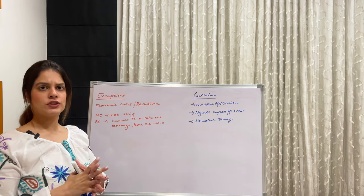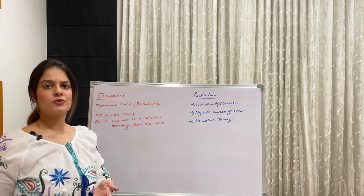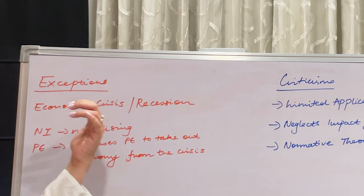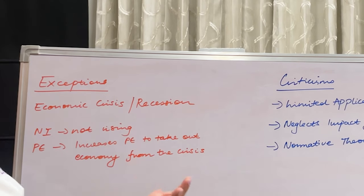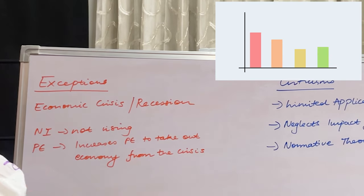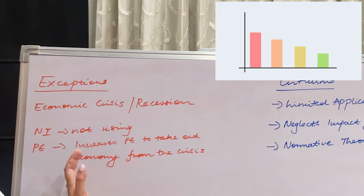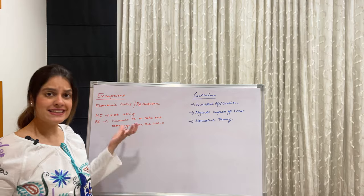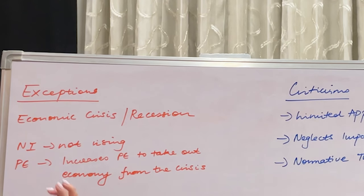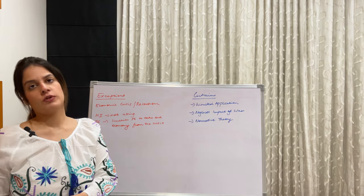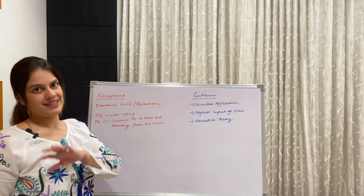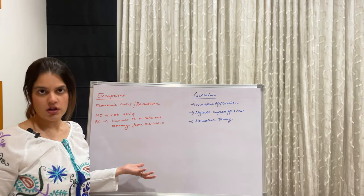Moving to the exceptions and criticisms of this theory. One exception is during an economic crisis or recession — at that time national income is not rising, yet the government must use fiscal tools and increase public expenditure to pull the economy out of crisis. So recession is an exception to Wagner's Law.